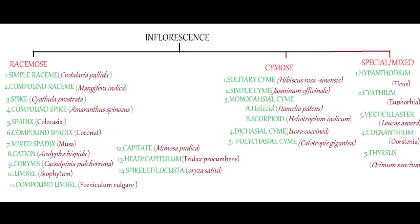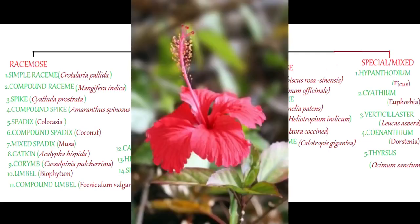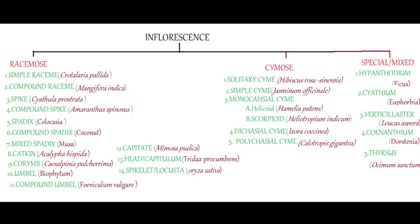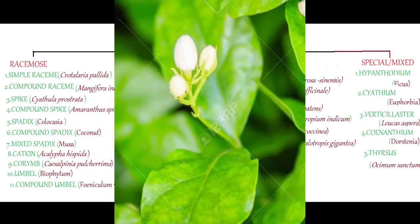The second type of inflorescence is cymose inflorescence, and there are 5 different types. The first one is solitary cyme — a single flower. All single flowers are examples for solitary cyme. Example: Hibiscus rosa-sinensis. The second one is simple cyme — a cluster of 3 pedicellate flowers, one terminal and others lateral. Example: Jasminum officinale. Here the middle one is the oldest and others are younger compared to the middle one.